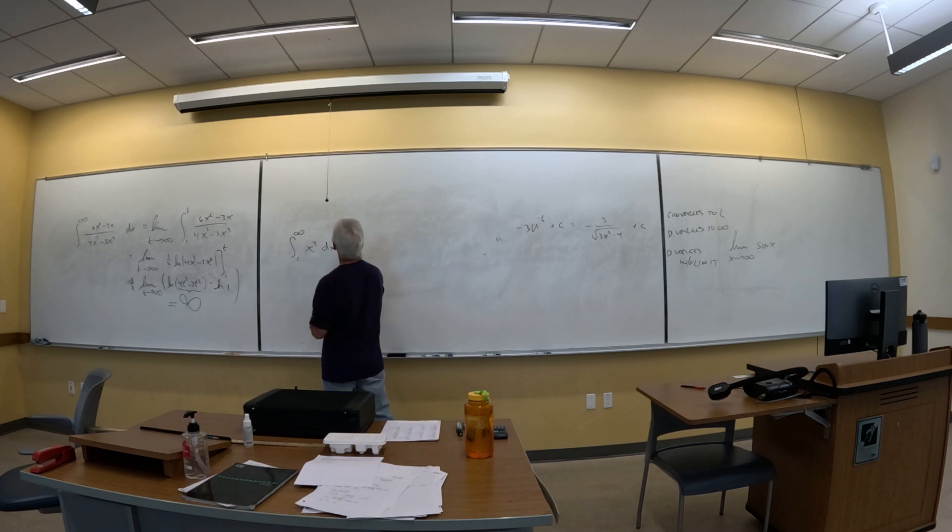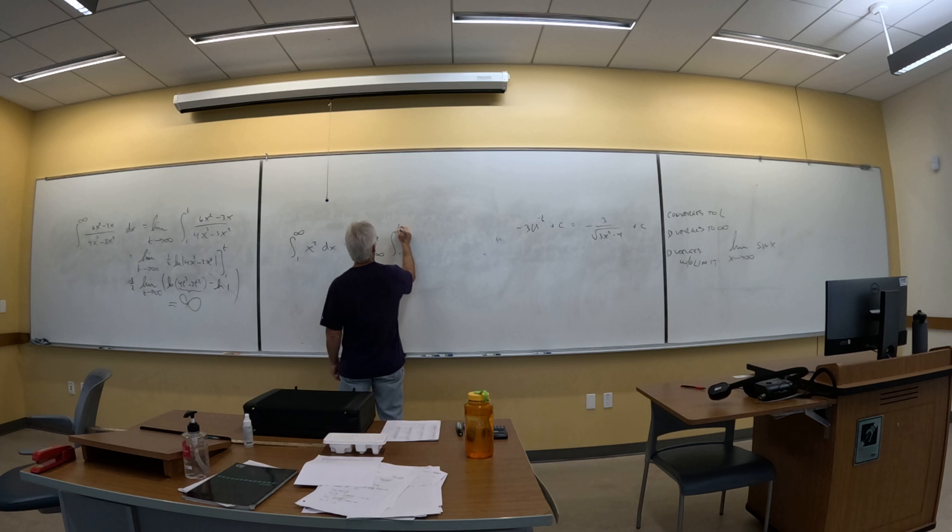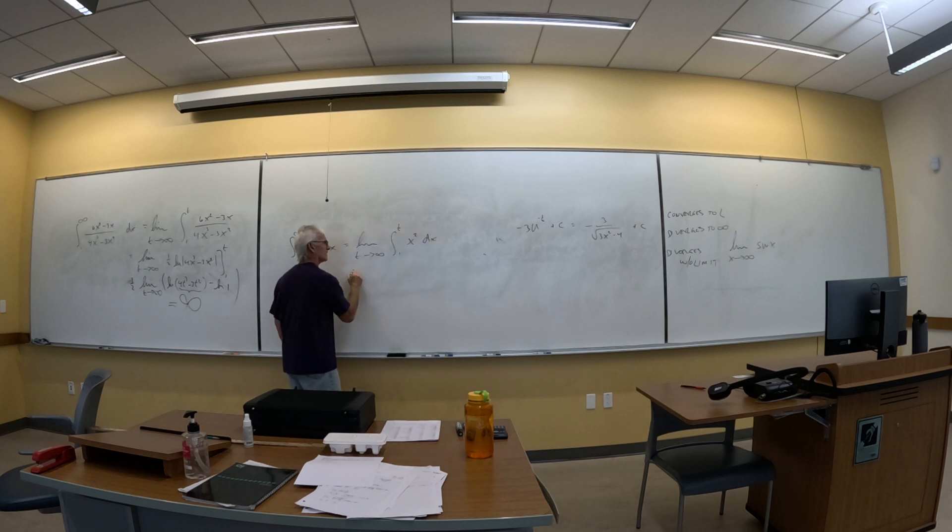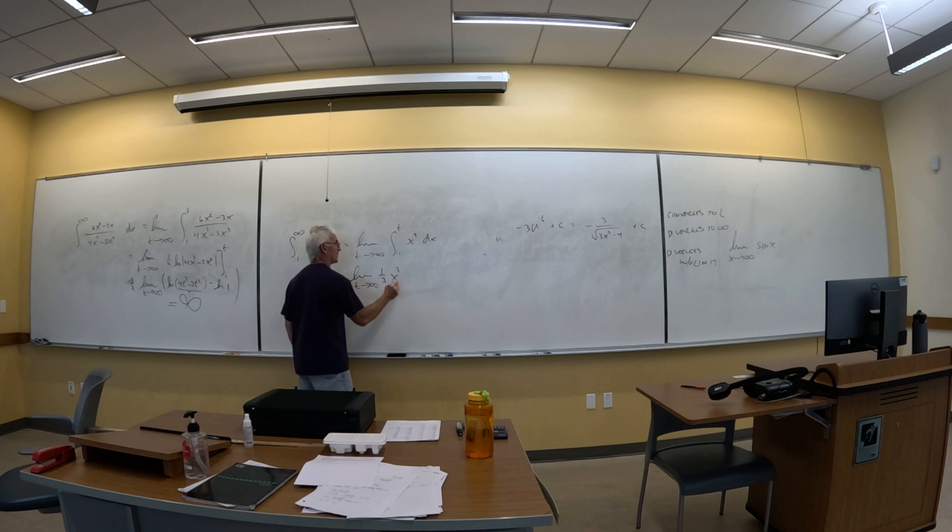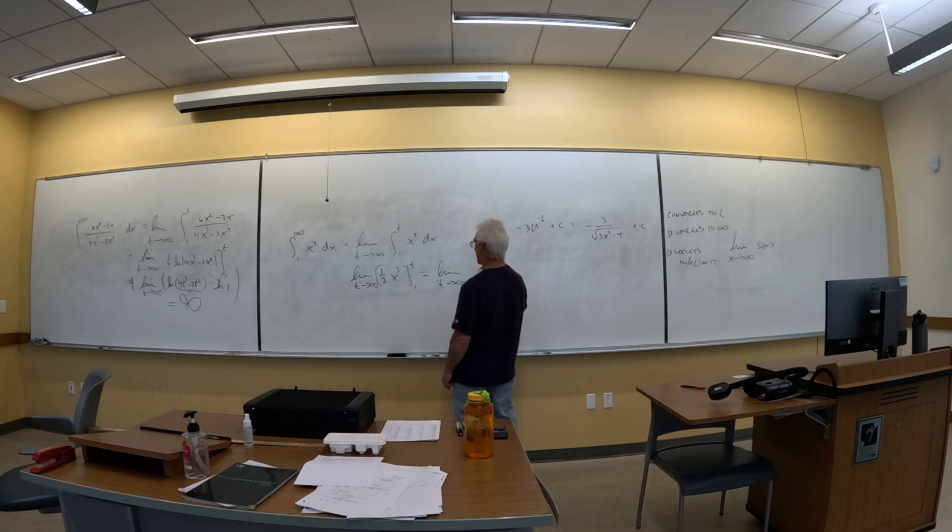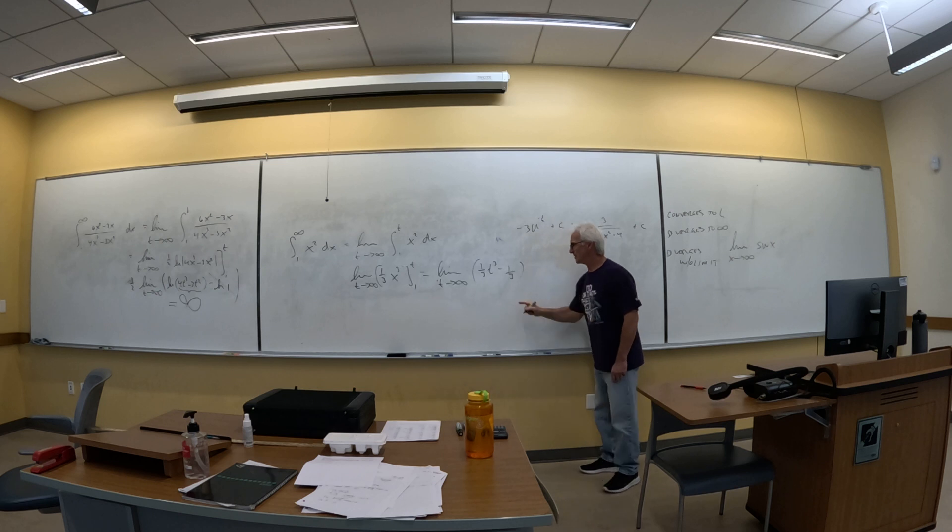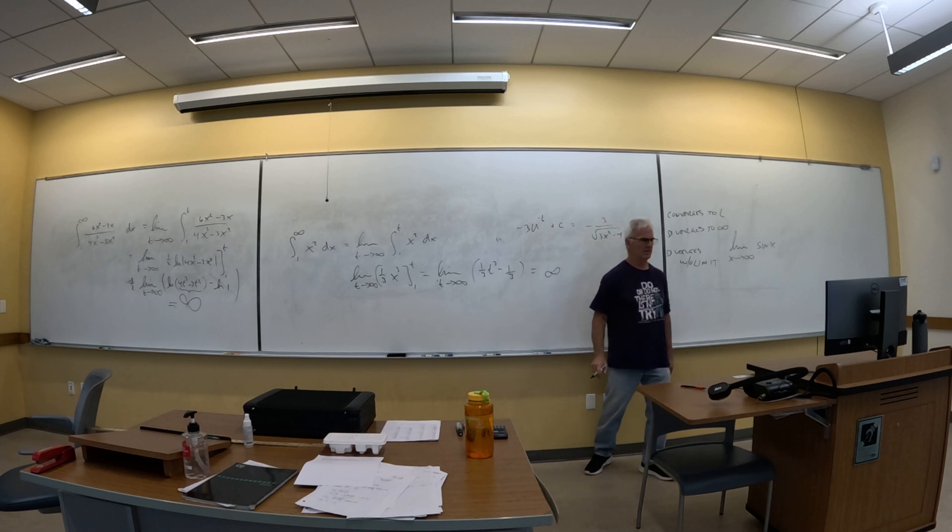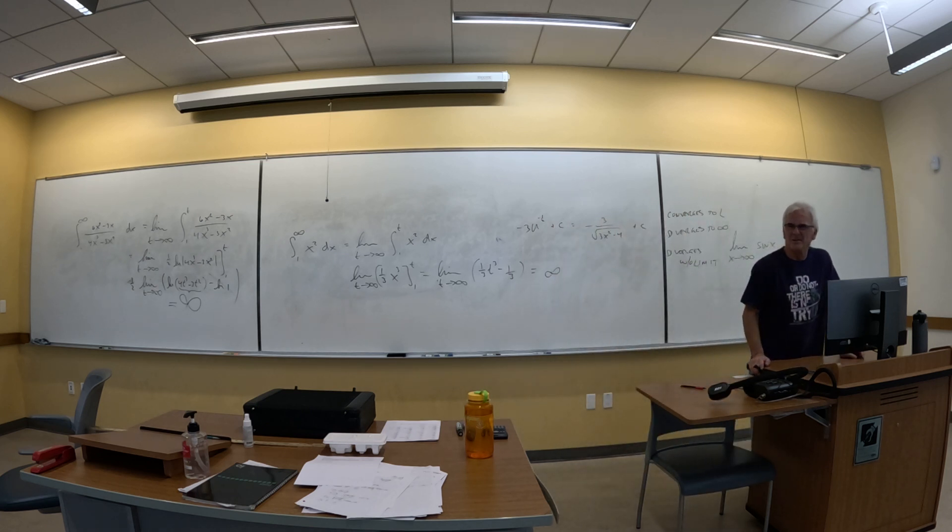We should just be able to easily take the anti-derivative, and then, well, the anti-derivative is the easy part. The question is, do I need to do a lot of work on this? Let's do it the formal way. I got 1/3 x³. The limit of 1/3 x³ from one to t, which is the limit as t goes to infinity of 1/3 t³ - 1/3, and I'm pretty sure that's getting really, really big. So that's infinite. My question is, could we have said infinity without really doing anything?